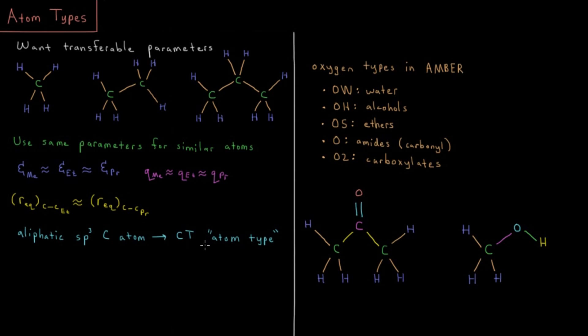So in general what you want is a small handful, a small library of atom types which are going to apply over a wide diversity of chemical structures in your intended applications. So for example in AMBER we have only I believe five different oxygen types.